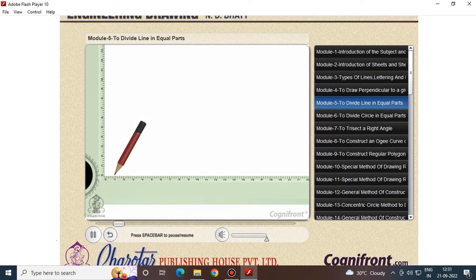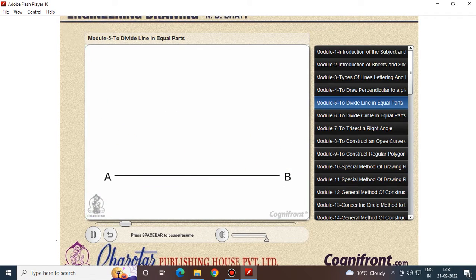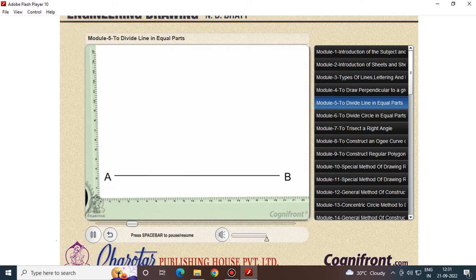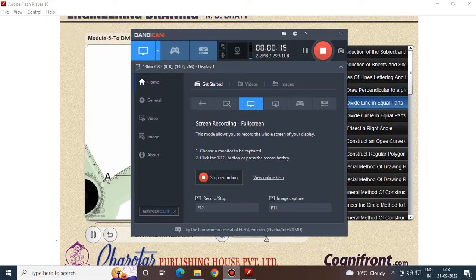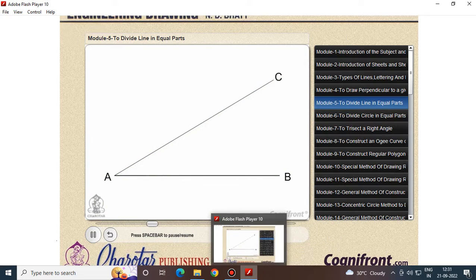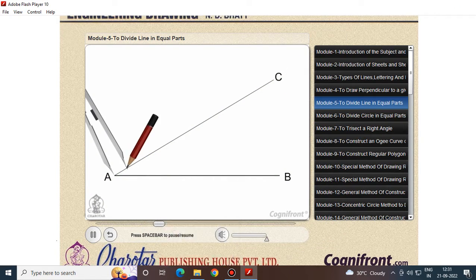First, consider line AB of any length and draw line AC making an angle of less than 30 degrees with AB. With the help of dividers, mark the line.